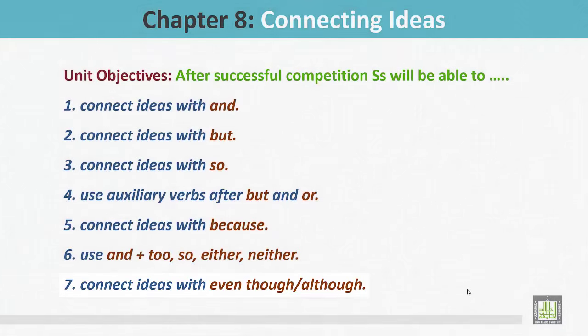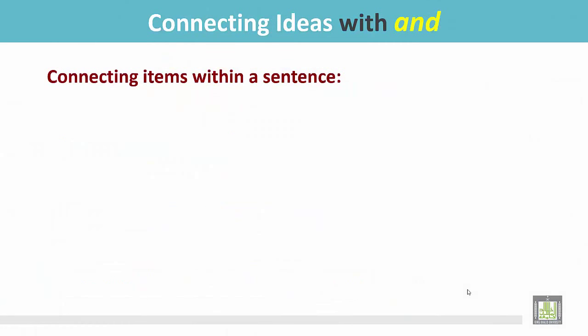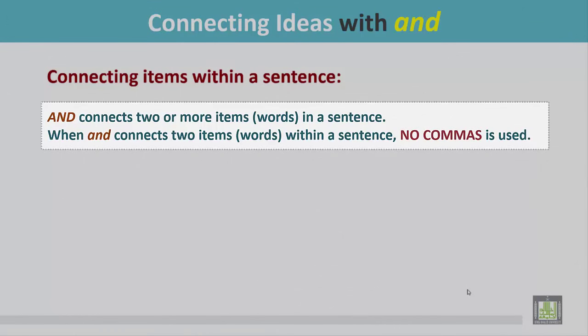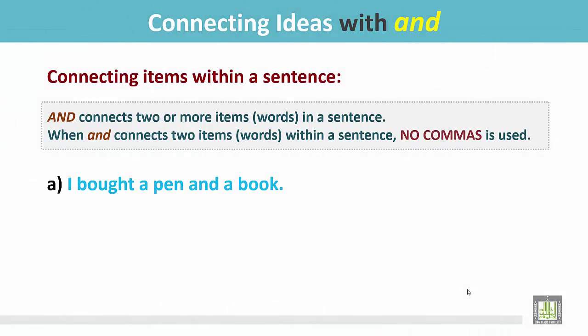Connecting ideas with 'and': connecting items within a sentence. 'And' connects two or more items or words in a sentence. When 'and' connects two items or words within a sentence, no comma is used. Example A: 'I bought a pen and a book.' Here you can see two items — a pen and a book — joined by 'and'.